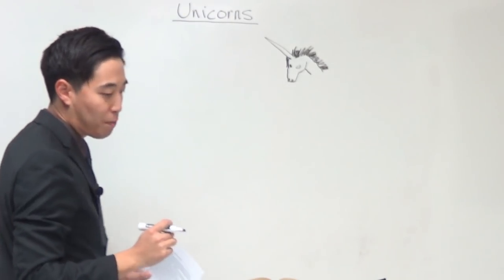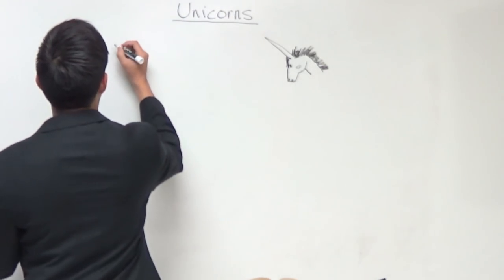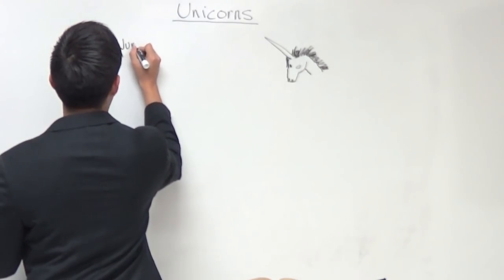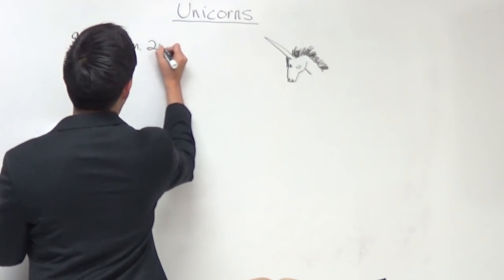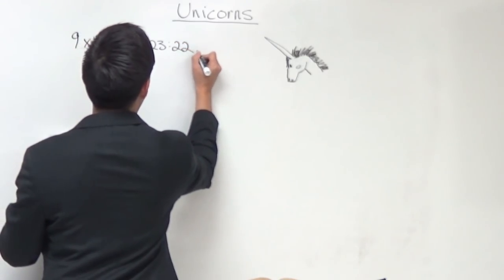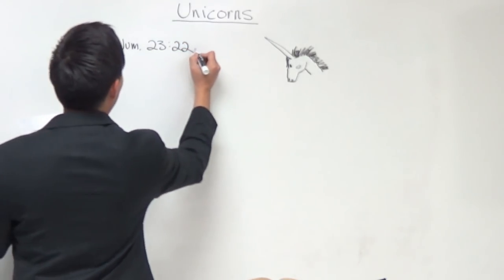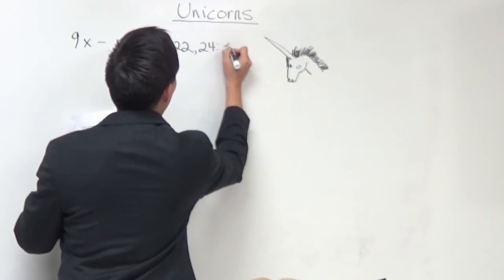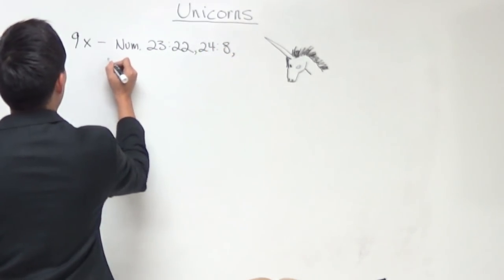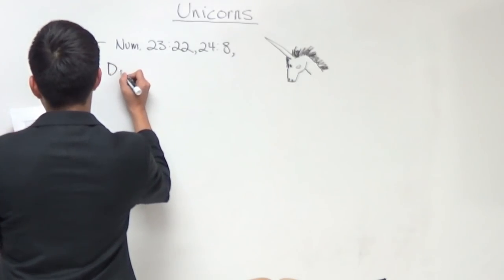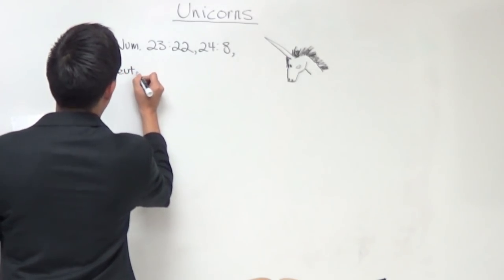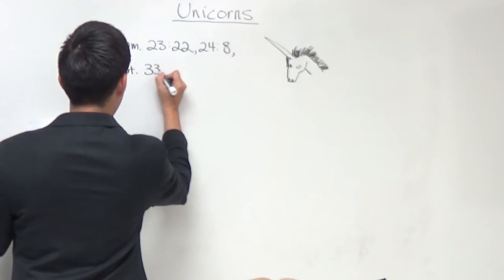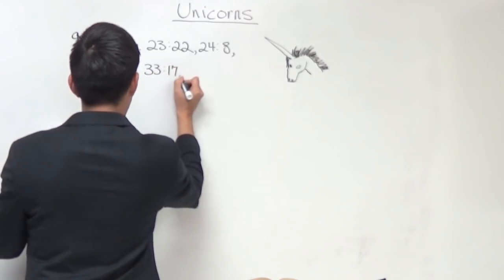These are the following passages that you will find on unicorns. The first one is Numbers chapter 23 and verse 22. Now, we're not going to look at all these passages. I'm just writing them out. The next one is Numbers chapter 24 and verse 8. The next one is Deuteronomy chapter 33 and verse 17.